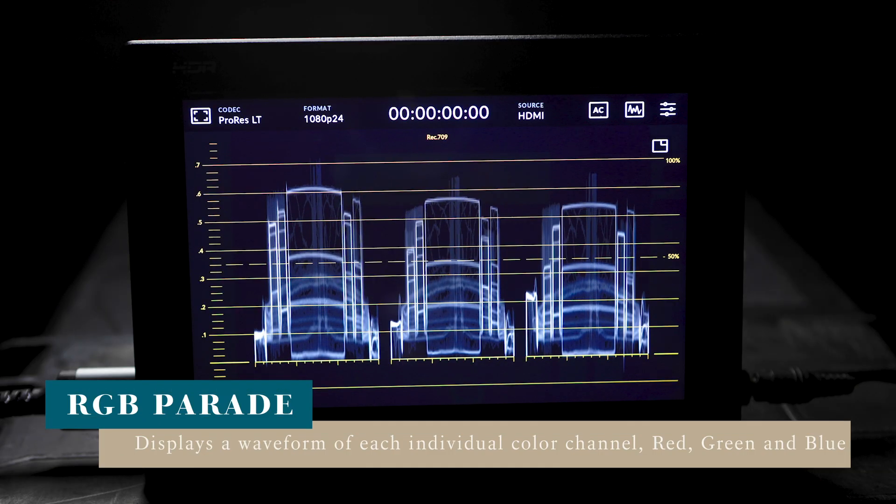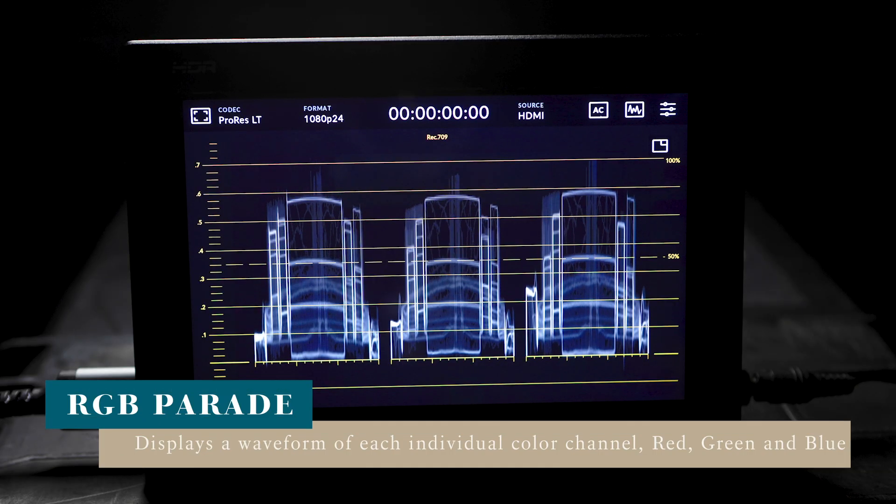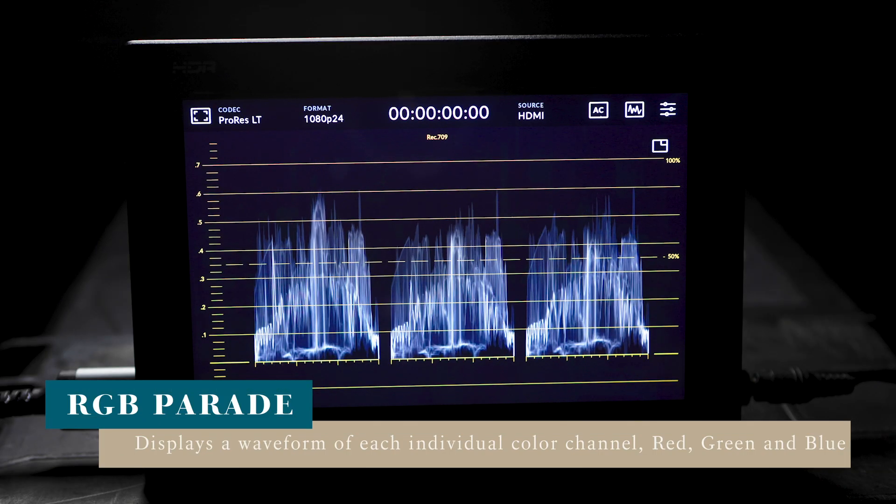An RGB parade displays a waveform of each individual color channel—red, green, and blue—and is helpful in determining color channel clipping and identifying color casts, especially in white or black portions of an image. Let's take a look at how each scope works.